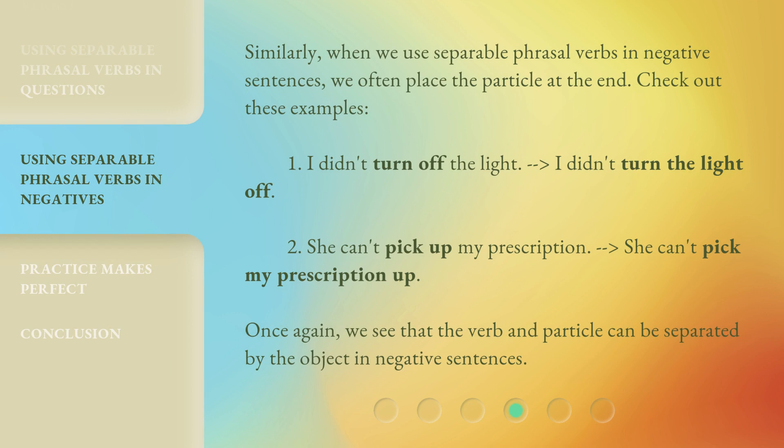Similarly, when we use separable phrasal verbs in negative sentences, we often place the particle at the end. Check out these examples. I didn't turn off the light. Or: I didn't turn the light off. She can't pick up my prescription. Or: She can't pick my prescription up. Once again, we see that the verb and particle can be separated by the object in negative sentences.